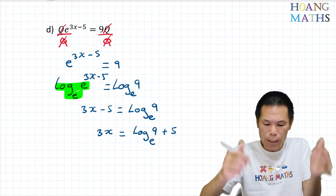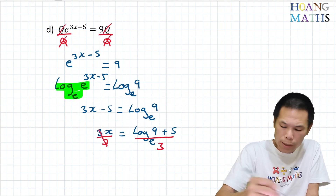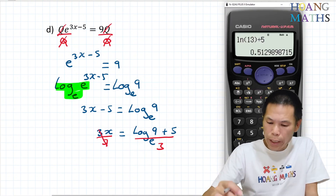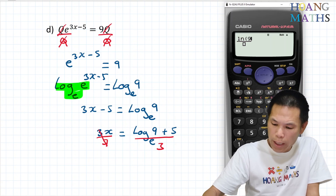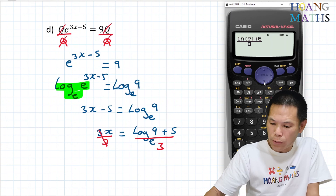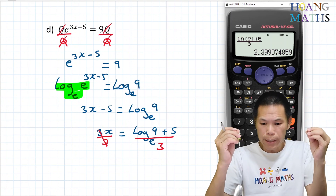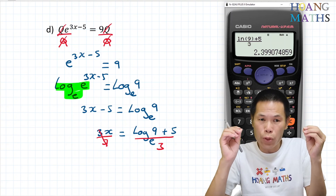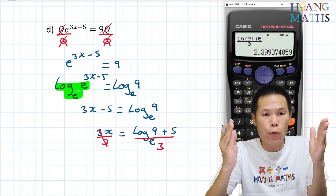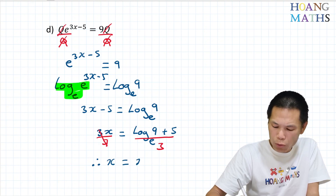Divide by 3 on both sides. x equals — I put that on the calculator: ln(9) plus 5, over 3. That gives 2.399. Correct to two decimal places: after 9 is 9, more than 5, so 39 plus 1 is 40. Therefore x equals 2.40.